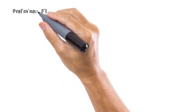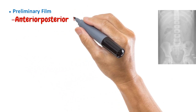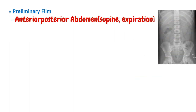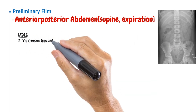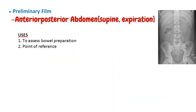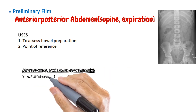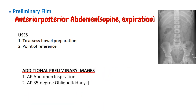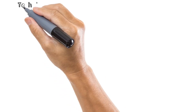Now, the preliminary film. The image taken before starting the procedure is an anterior-posterior view of the abdomen, taken supine and on suspended expiration. It should include an outline of both kidneys and the bladder. It is useful in checking if bowel preparation is sufficient and serves as a reference to which subsequent images are compared. If an opacity or anomaly is seen, additional views are taken — including another AP image of the abdomen taken on suspended inspiration, and an AP 35-degree oblique of each kidney.